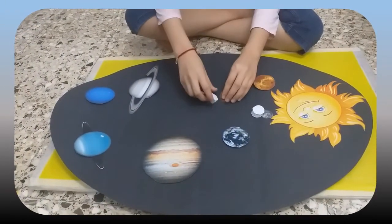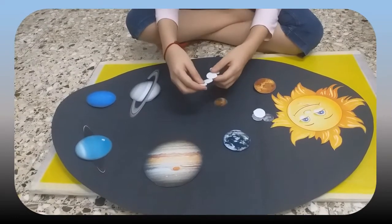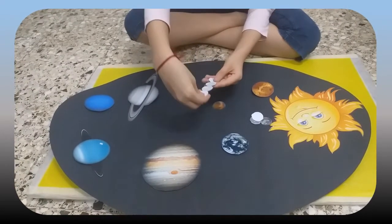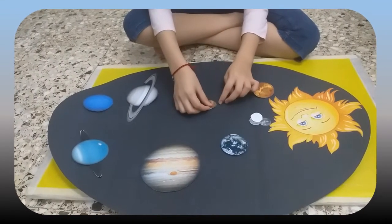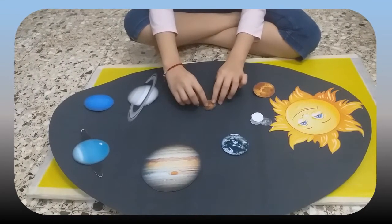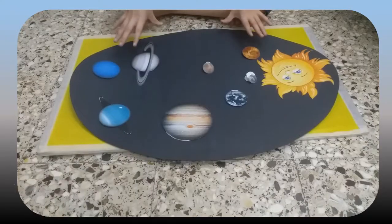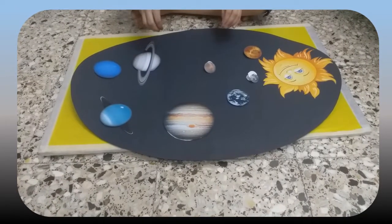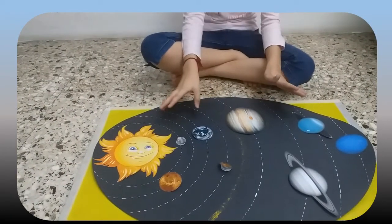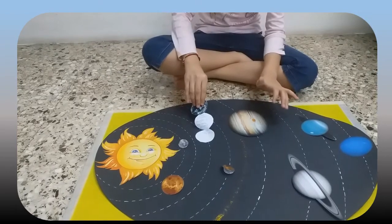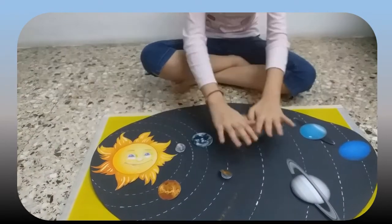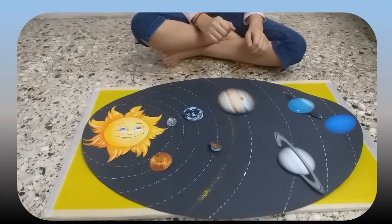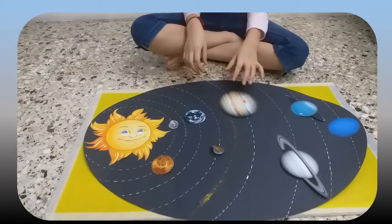And this is Mars. So under it there is content. Then we will cover it with the Mars picture. In all planets we have the contents. So now I have stuck these contents under them. Here this is, and we have done the same in all the planets.